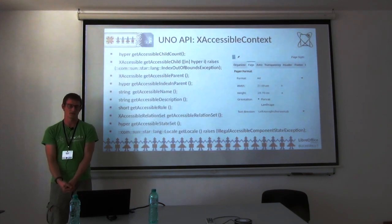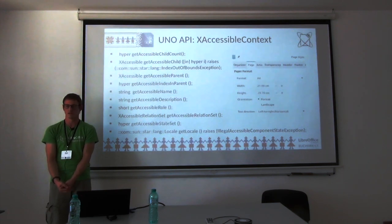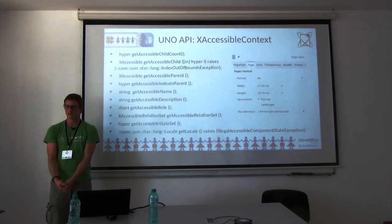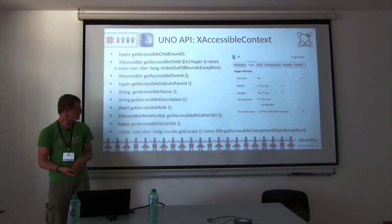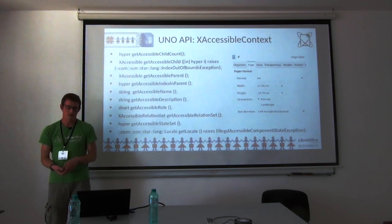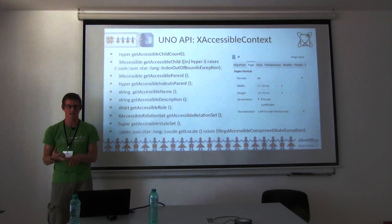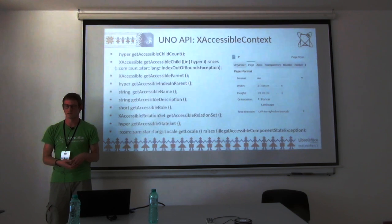Screen readers handle different kinds of UI controls differently. For a paragraph, they might read out the current text; for a button, fewer options exist. Elements also have states — focused, selected, visible, or invisible — and depending on those states, the element is treated differently.